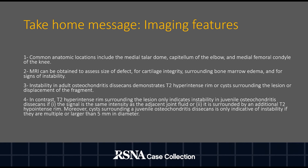Instability in adult osteochondritis dissecans demonstrates a T2 hyper-intense rim or cysts surrounding the lesion, or displacement of the fragment. In contrast, a T2 hyper-intense rim surrounding the lesion only indicates instability in juvenile osteochondritis dissecans if the signal is the same intensity as the adjacent joint fluid, or if it is surrounded by an additional T2 hypo-intense rim. Moreover, cysts surrounding a juvenile OCD are only indicative of instability if they are multiple or larger than 5 millimeters in diameter.